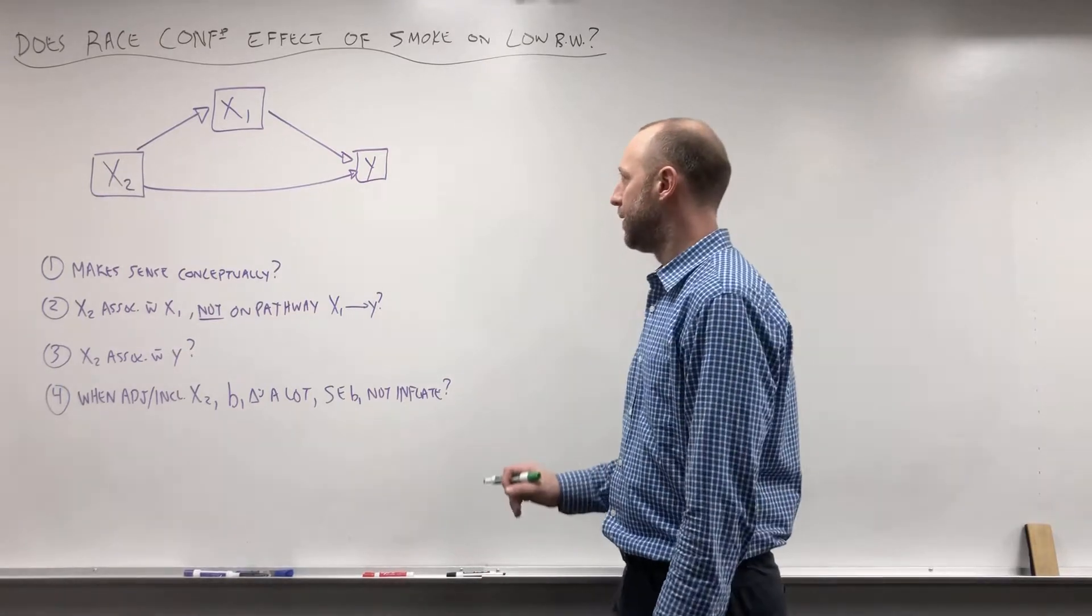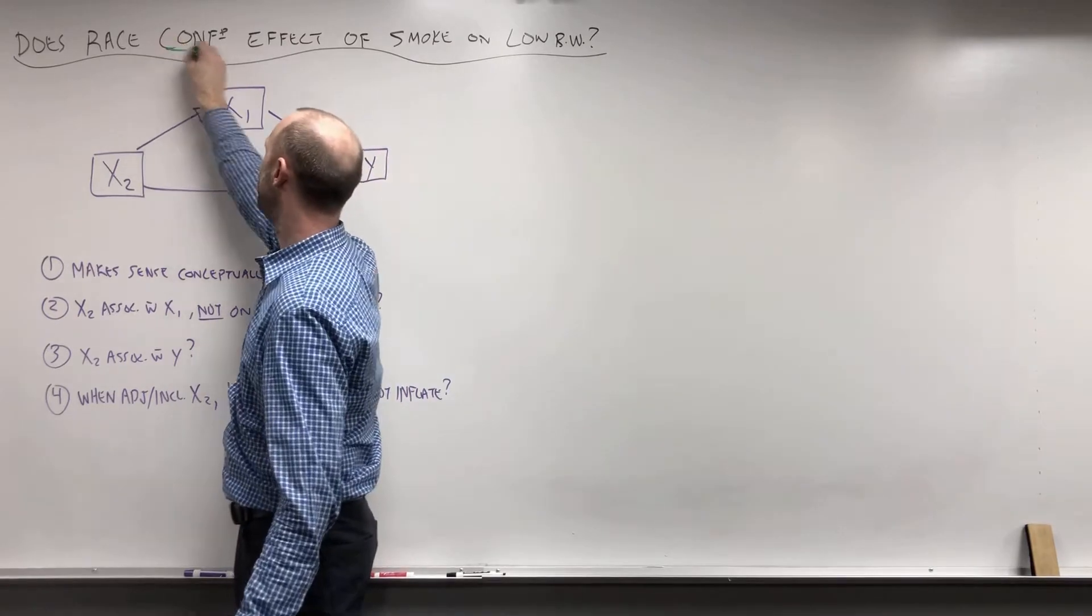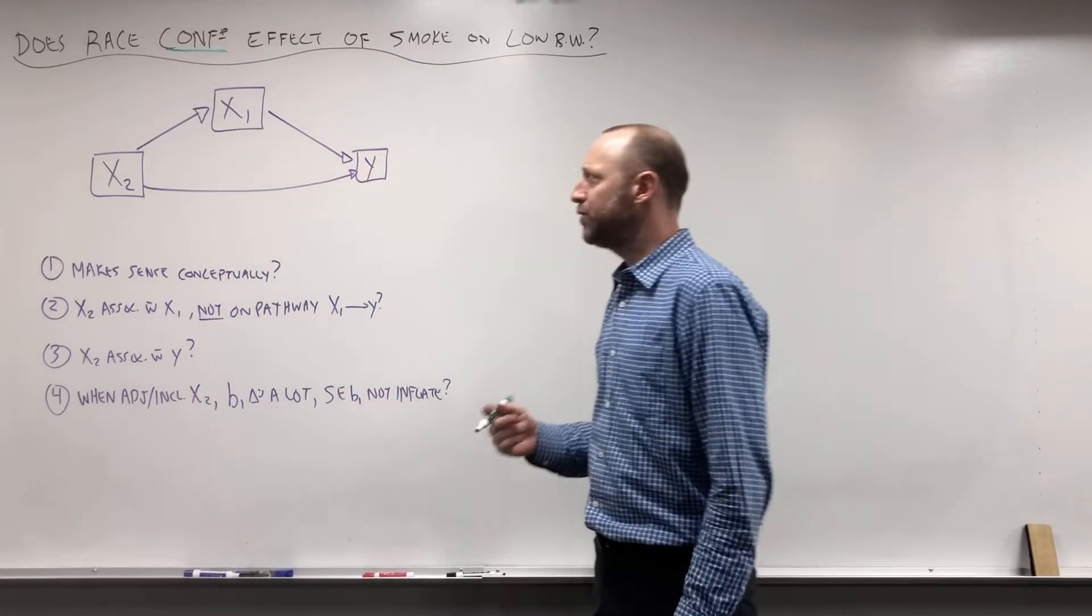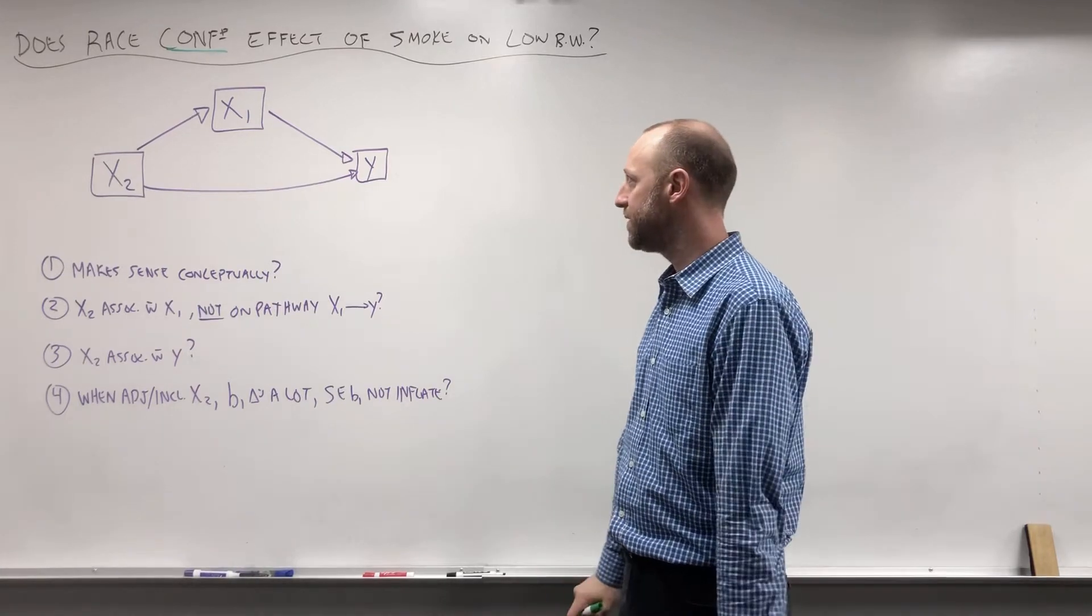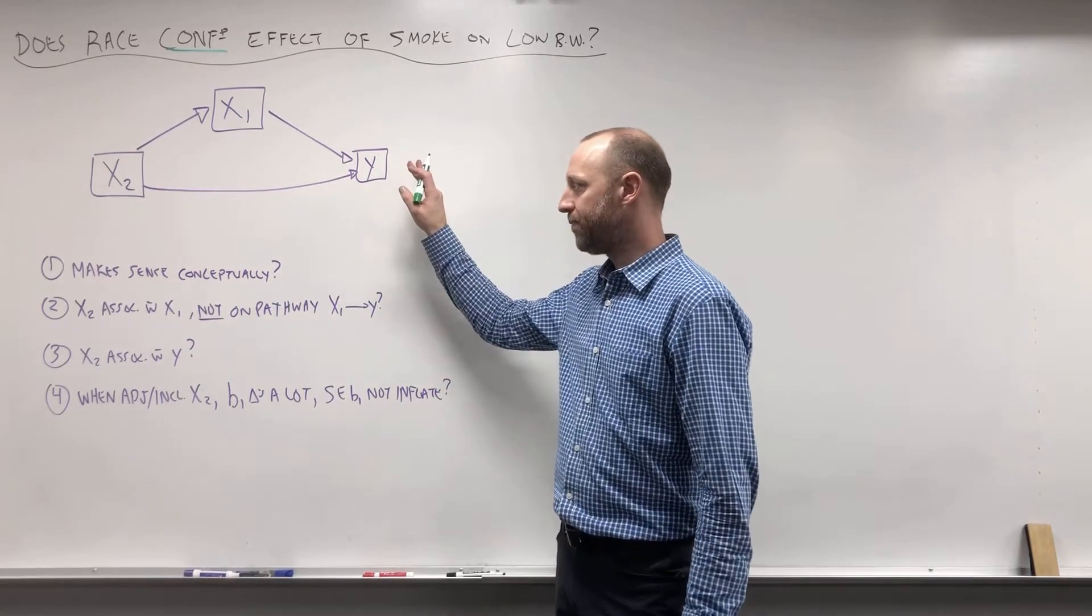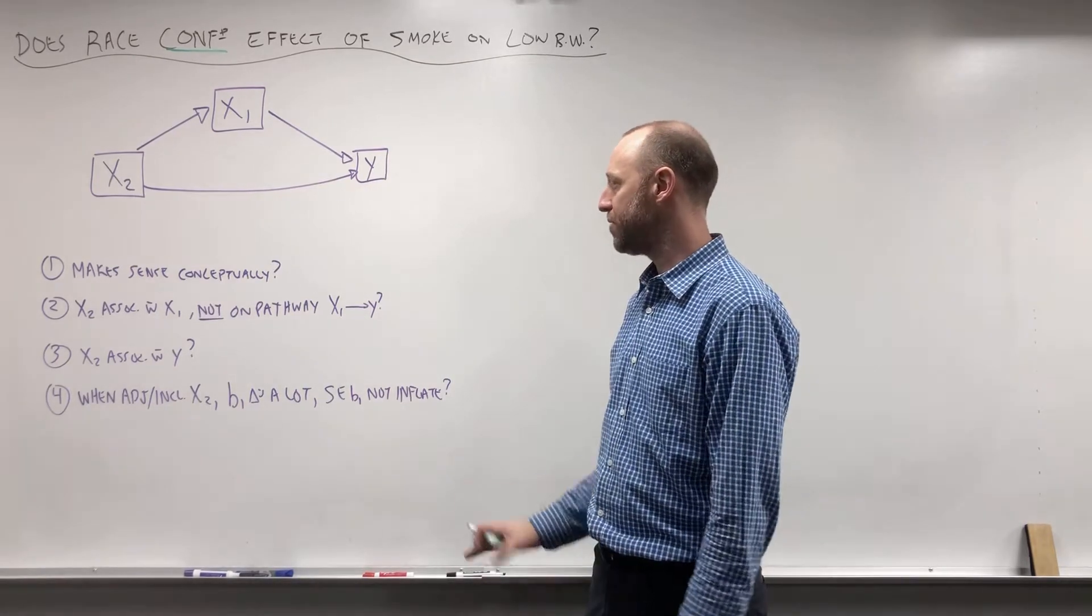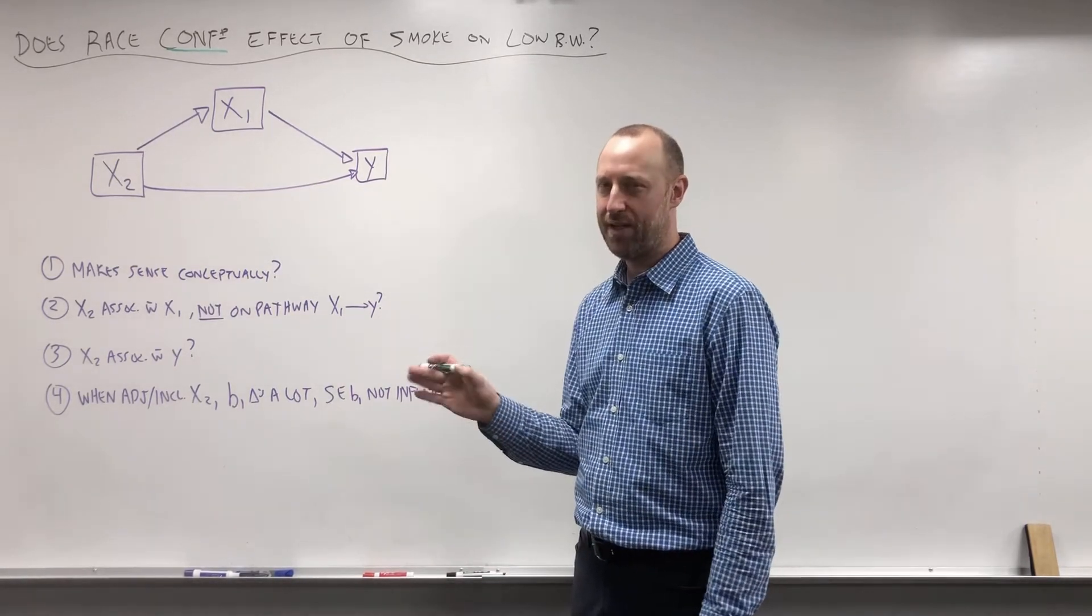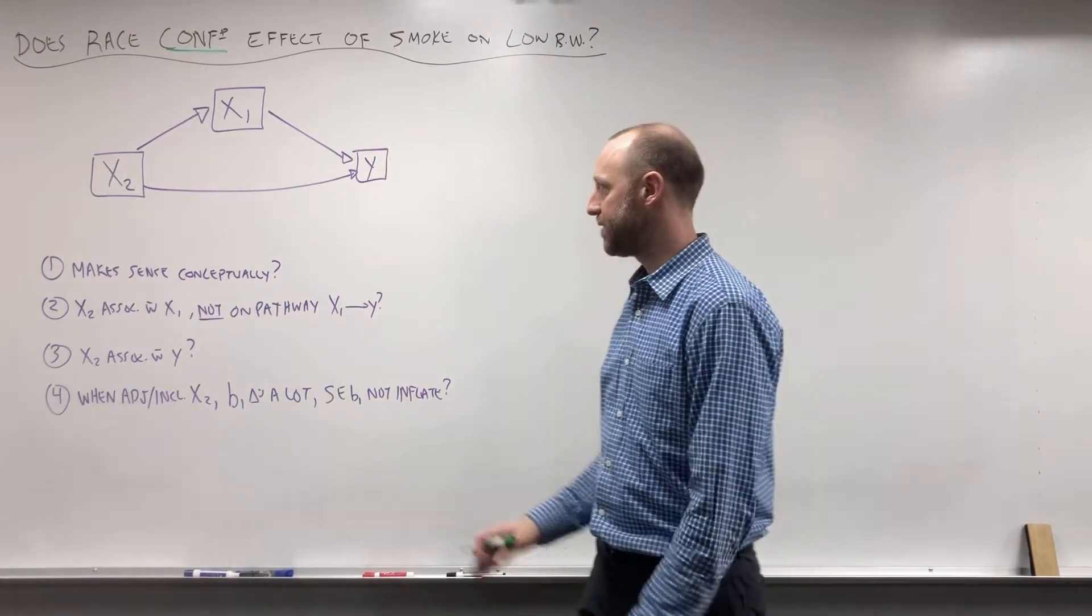I want to remind you that we've already talked about confounding previously, so we're going to lean on the understanding we've built. We're not going to re-explain all the exact same ideas. I want to say here that confounding is confounding regardless of the type of regression model. The way we look for it might differ slightly depending on the types of variables we have, but the concept of confounding is always the same.